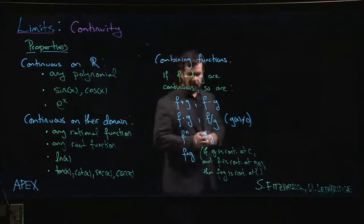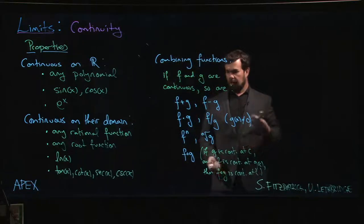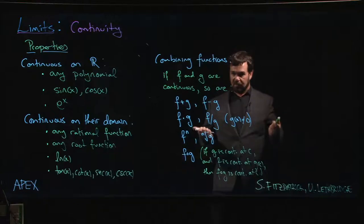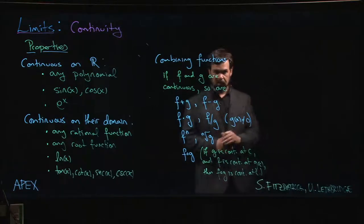then f composed with g will be continuous at c. So composition of continuous functions is continuous. And that means that you can now build lots of interesting examples of continuous functions, and we'll look at a couple of them in the next video.